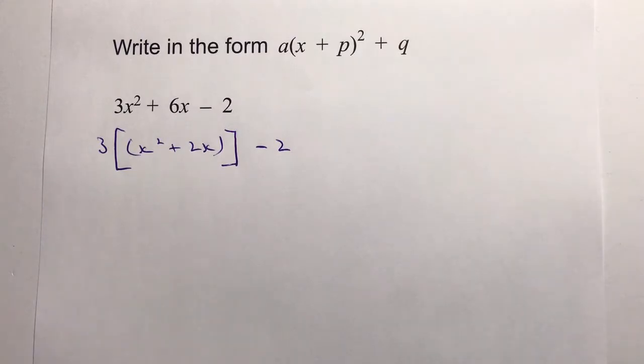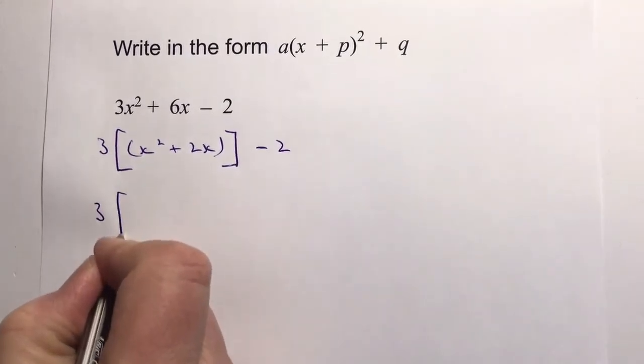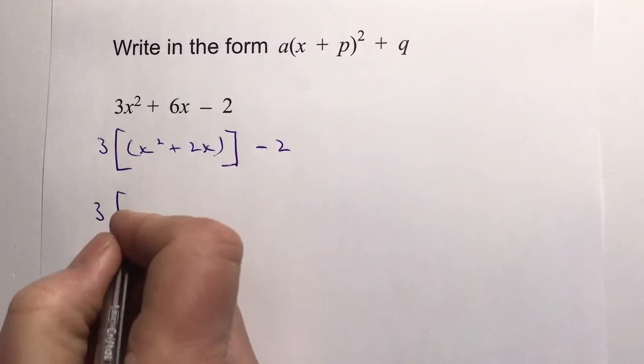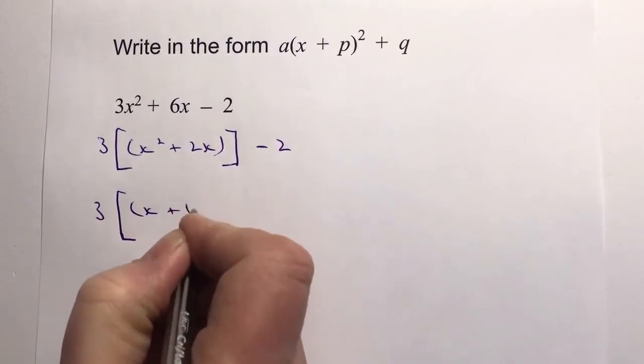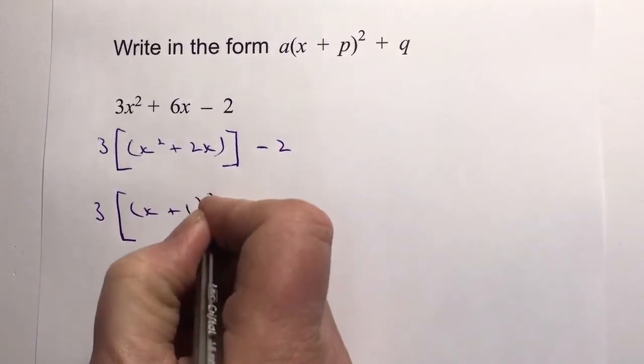Now I'm going to use my normal technique to complete the square. I'm going to leave this 3 out, and again I'm going to use big square brackets and write (x + 1)².